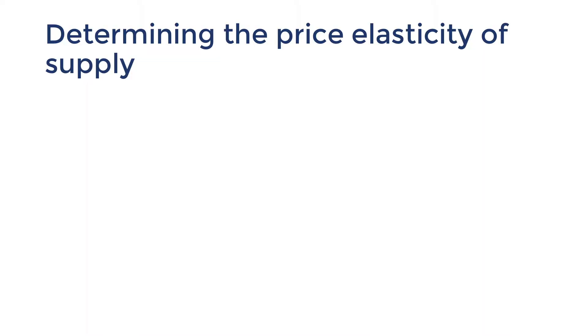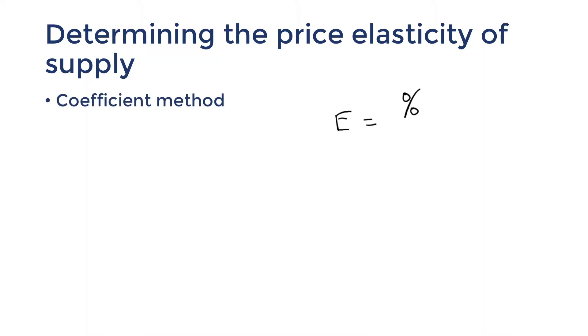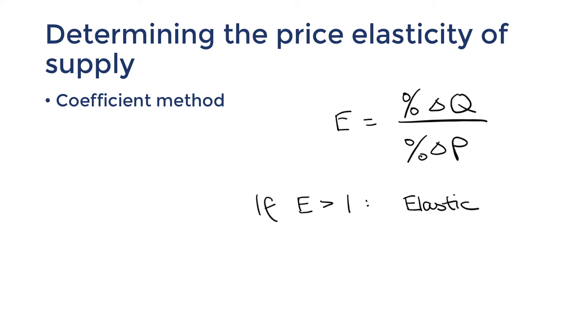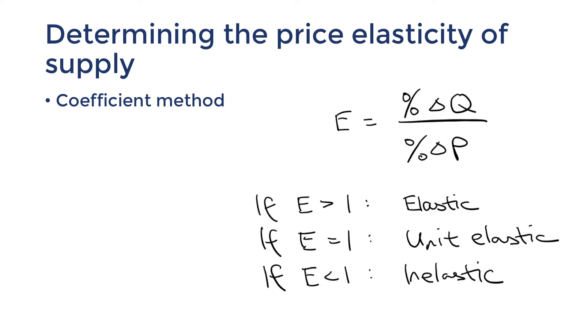When we learned about the price elasticity of demand we also learned how to calculate the elasticity. But our current syllabus states that we don't actually need to know how to calculate the elasticity of supply. But in case you're interested, the coefficient method from demand works here too. Here's the formula — it calculates the movement of quantity as a proportion of the movement in price. If the coefficient is greater than one, a small change in price has caused a large change in quantity, so it's price elastic. If it's one, it's unit elastic. If it's lower than one, it's inelastic. Again, you don't need to know this in the current syllabus.